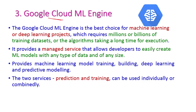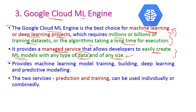The third one is Google Cloud ML Engine. This is a very powerful and best choice for developers in machine learning or deep learning projects, especially projects requiring millions or billions of training data points or algorithms that take a very long time for execution. It provides a managed service that allows developers to easily create machine learning models with any type or size of data, supporting model training, building, deep learning, and predictive modeling. The two types of services provided — prediction and training — can be used individually or combined.